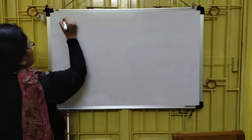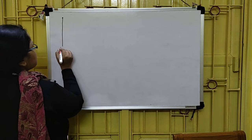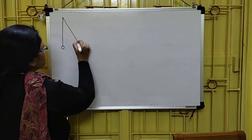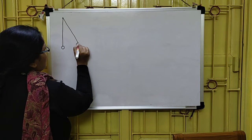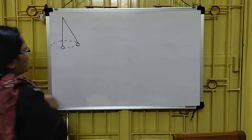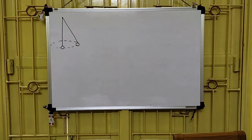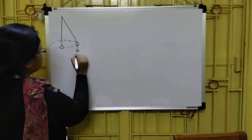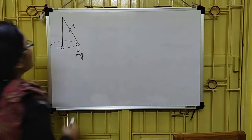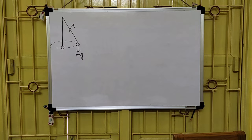First of all we need to draw the diagram. Here we have the attachment of the string at the top — this is the mean position. When the bob makes that horizontal circular motion, this is the circular path of rotation. At that point, Mg of the bob acts in the downward direction. Tension in the string acts towards the attachment point. This tension makes an angle theta with the mean position — so this is theta.